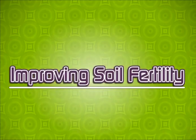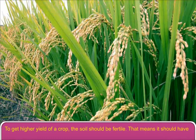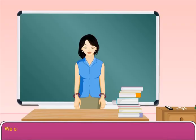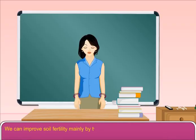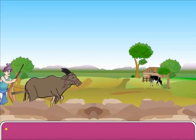To improve soil fertility and get a higher yield of a crop, the soil should be fertile, meaning it should have a lot of humus and minerals. We can improve soil fertility mainly by two ways: by adding manures and fertilizers, and by crop rotation method.